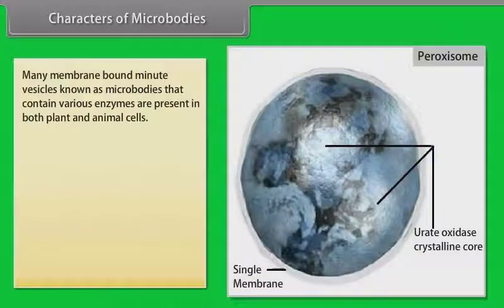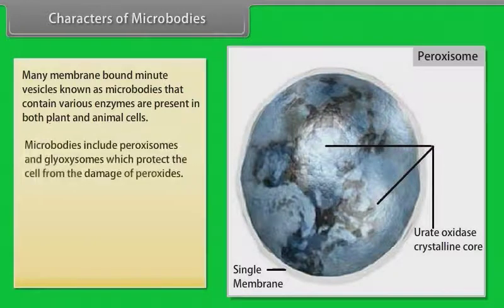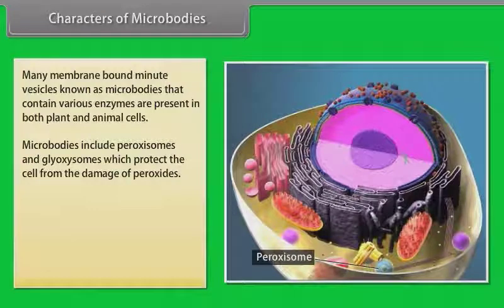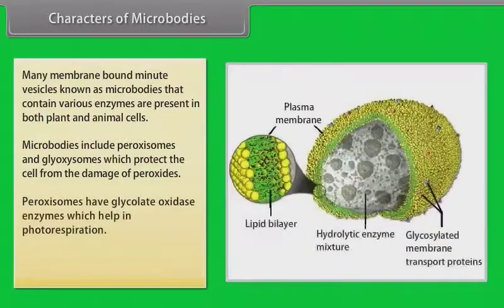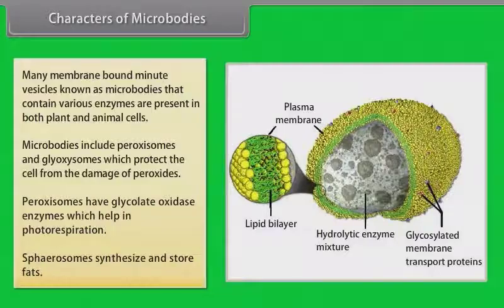Characters of microbodies. Many membrane-bound minute vesicles known as microbodies that contain various enzymes are present in both plant and animal cells. Microbodies include peroxisomes and glyoxysomes, which protect the cell from the damage of peroxides. Peroxisomes have glycolate oxidase enzyme, which helps in photorespiration. Spherosomes synthesize and store fat.